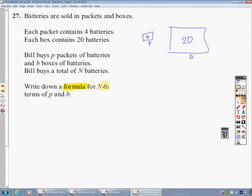Write down a formula for n - that's the total number of batteries - in terms of p and b. Well, when it says a formula for n, that means it's got to be n equals. So I'm going to start with n equals. That's a start. In terms of p and b. Well, p is the packets of batteries. And I know from here that there's four in each. So it's going to be 4p. And b - b is the boxes of batteries. And there's 20 in each of those. So it's going to be plus 20b. There's my question.